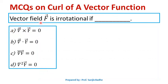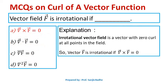Next question: A vector field F̄ is irrotational if — options are curl of F̄ is 0, divergence of F̄ is 0, gradient of F̄ is 0. An irrotational vector field means curl is 0. Therefore, vector F̄ is irrotational if curl of F̄ = 0. Option A is correct.